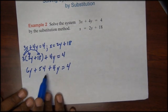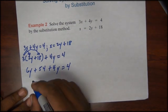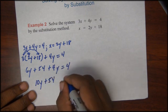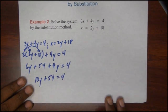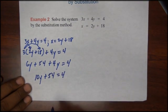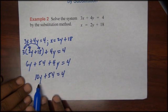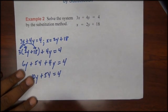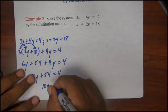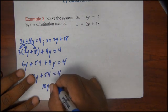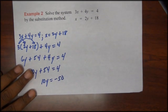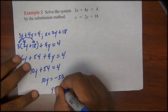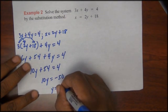We have 6y plus 54 plus 4y is equal to 4. Combining like terms: 6y plus 4y is 10y, plus 54 is equal to 4. In order to solve for y, I will subtract 54 from both sides, so we have 10y is equal to negative 50. Dividing both sides by 10, therefore y is equal to negative 5.